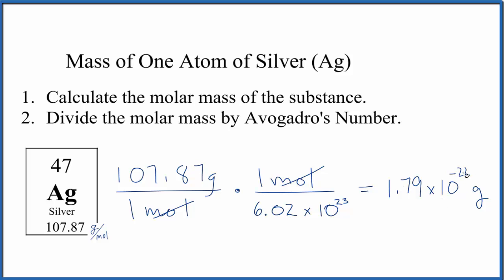If you wanted to have this in kilograms, the mass of one atom of silver in kilograms, you would just divide this by a thousand. So you'd have 1.79 times 10 to the negative 25th.